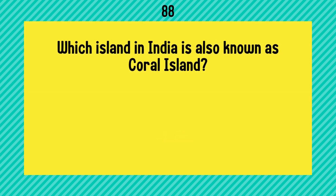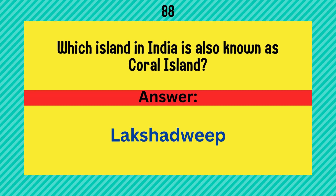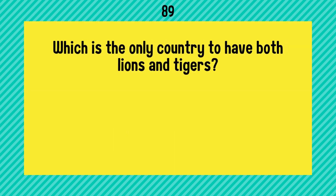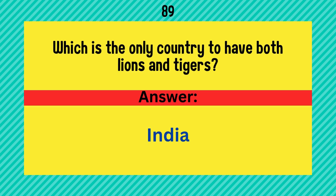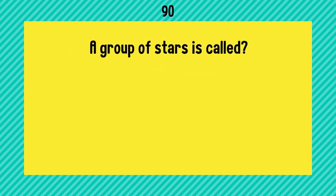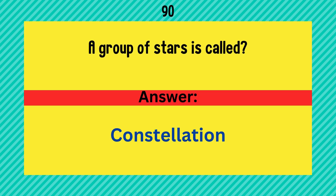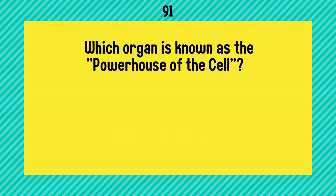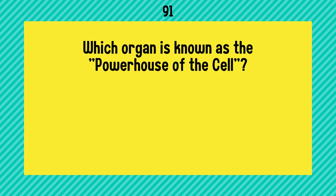Which island in India is also known as Coral Island? Answer is Lakshadweep. Which is the only country to have both lions and tigers? Answer is India. A group of stars is called? Answer is constellation.